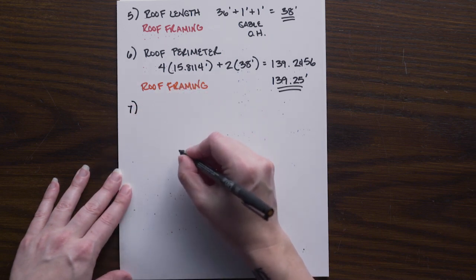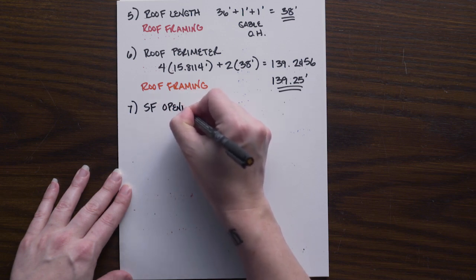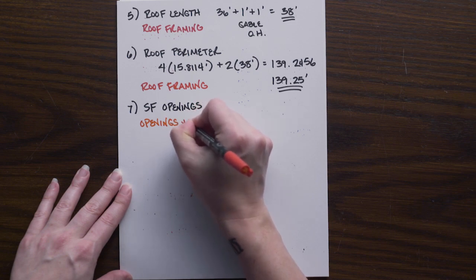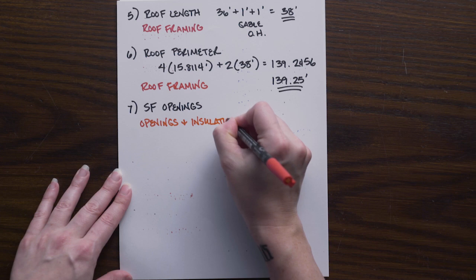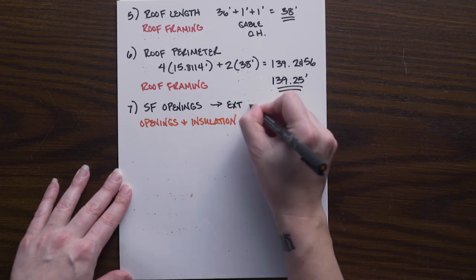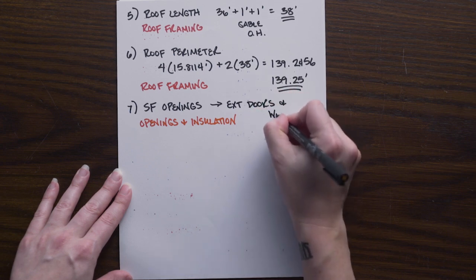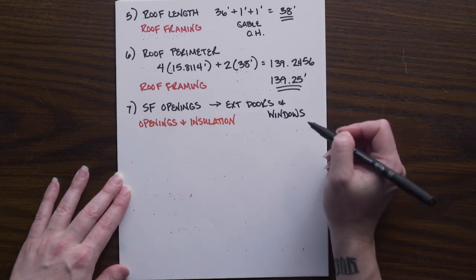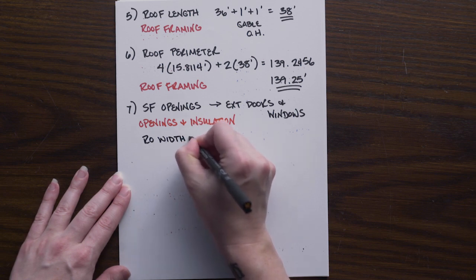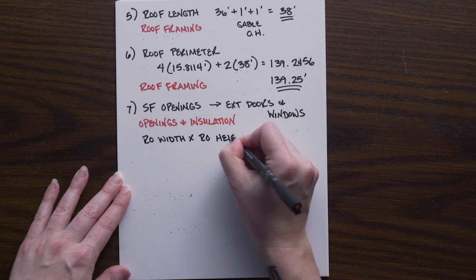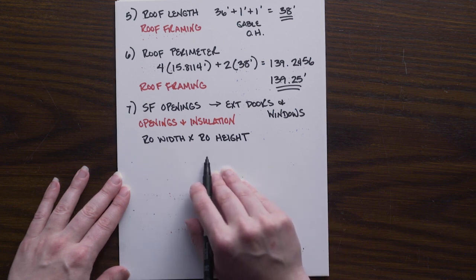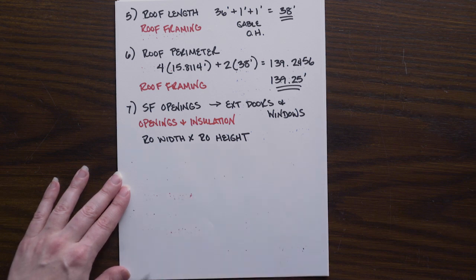The last one in the review problem set is the square foot of openings. So this came from our openings and insulation sample problem. So this is all exterior doors and windows. Please refer back to the table that was created to help you calculate what the square foot of openings are. Again, it's the rough opening width times the rough opening height to get each of these individual numbers. When we're using our doors, remember we have to add two inches to the width and two inches to the height of the door slab to get the rough opening width and height. When it comes to the windows, we just read what is off the manufacturer specifications or what was in our window schedule.